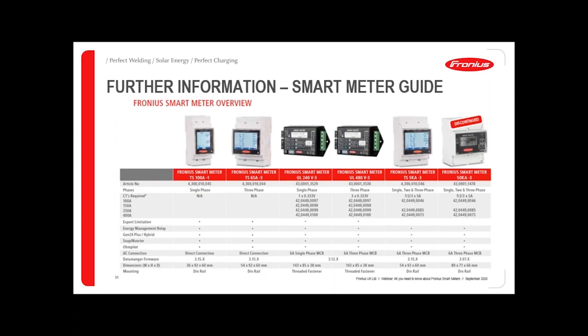On the back page of the document, you'll see a list of all the different meters and the CTs required for each meter, whether it be 100 amp through to 400. If you have a meter that requires larger CTs, you'd need to source those separately. Fronius offer the sizes there, but it may be that you have a larger system which is not readily available. There are obviously many wholesalers and distributors for CTs on larger bespoke sites. As long as they have the correct output and the correct accuracy class, you're able to source those separately.